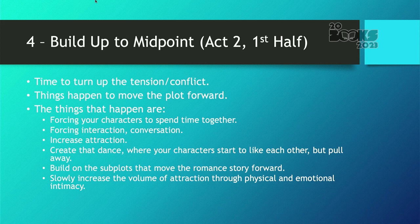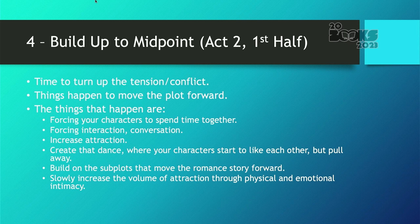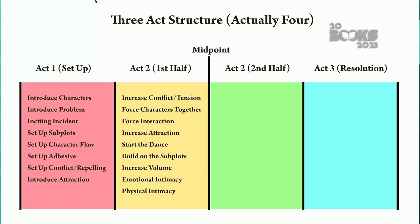Act two, first half — this is the buildup to the midpoint. It is now time to turn up the tension and the conflict. You need to force your characters to spend time together, forcing the interaction and the conversation. Increase the attraction. Create that dance where the characters start to like each other but have that pullback. Build on those subplots that move that romance story forward, and slowly increase the volume of attraction through physical and emotional intimacy. In the chart: increase conflict and tension, force your characters together, forced interaction, increased attraction, start that dance, build those subplots, increase the volume of emotional and physical intimacy.